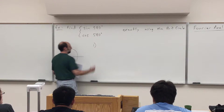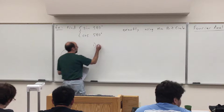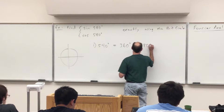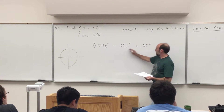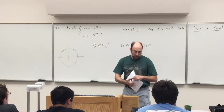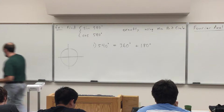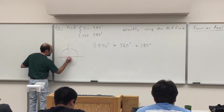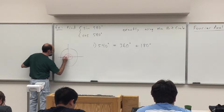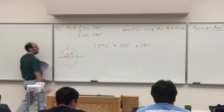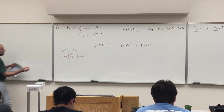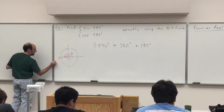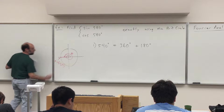First, let's represent 540 degrees as an angle in standard position. How many rotations do we have? It's like one and a half. 540 degrees equals 360 degrees plus 180. So I have my full revolution plus a half revolution — my angle is going to be a quadrantal angle. My theta winds around once and ends up here.